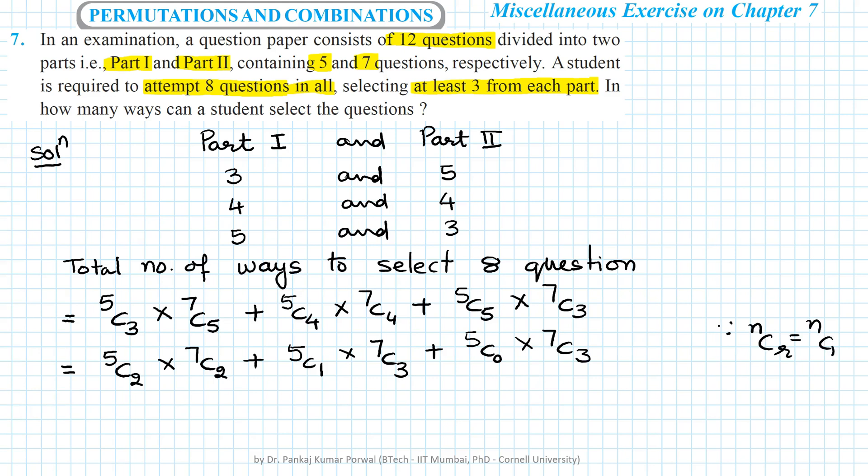I will not do the detailed calculation, but this simplifies to 210 + 175 + 35, and the total is 420 different ways to select or attempt 8 questions from the two parts.